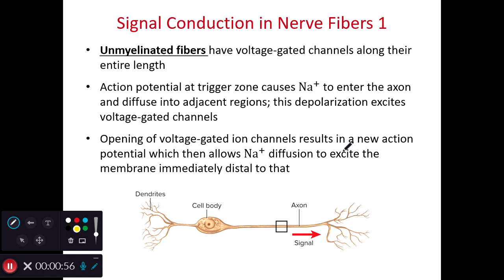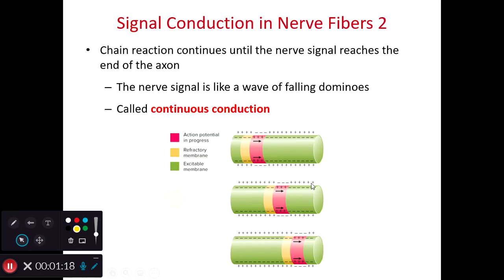The opening of the voltage-gated channels will allow other regions of the membrane directly next to it to depolarize, reach threshold, and initiate another action potential. So this process — just the action potential — travels the length of the axon. This process is going to be continuous, and it is called continuous conduction because of its continuous nature.